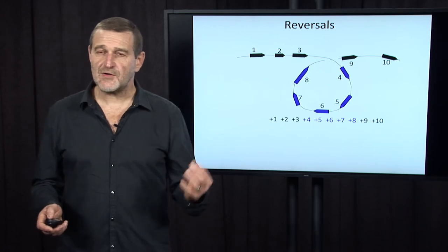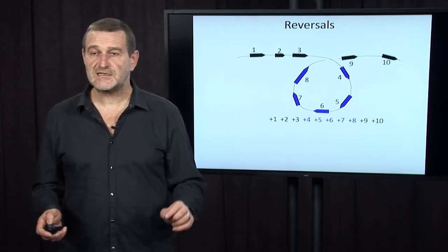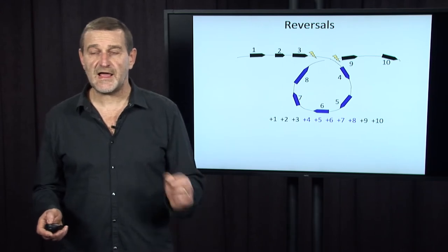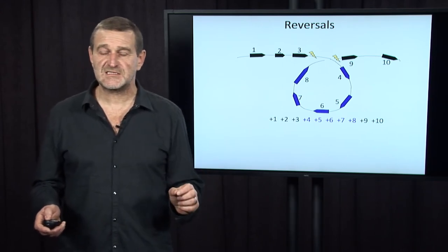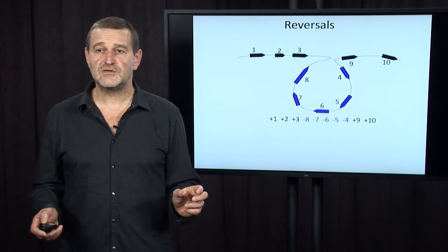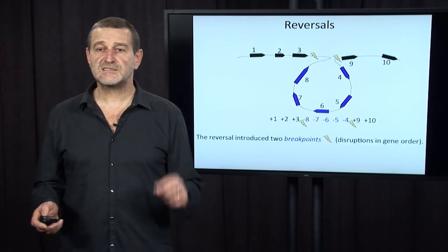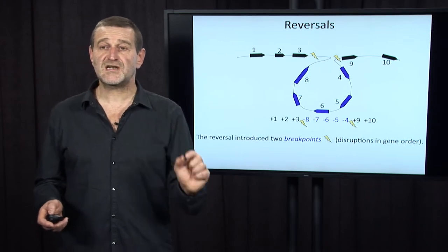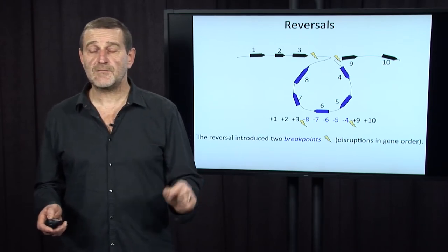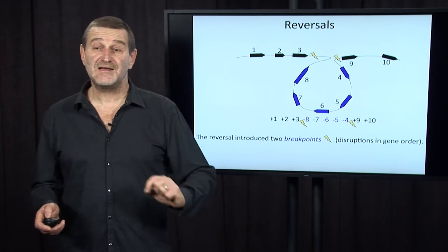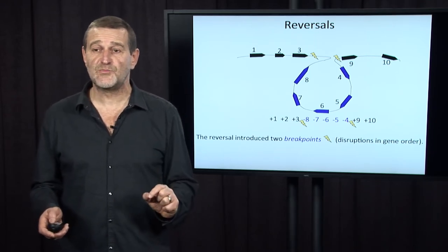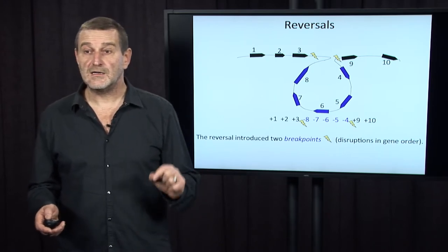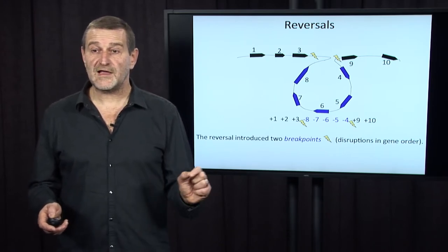Now, a reversal - you can think about a reversal as something that breaks a chromosome at two places and glues the resulting pieces in a new order, as shown on this slide. As a result, the reversal introduces two breakpoints, disruptions in gene order. For example, plus three and minus eight are not supposed to be together, but they are together in the new permutation. And the same thing applies to minus four and plus nine.